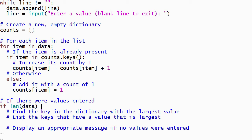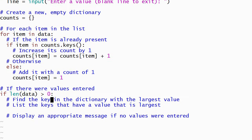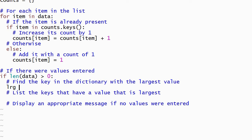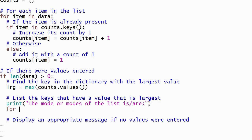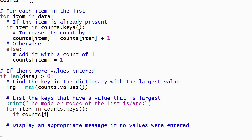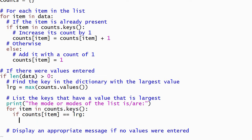We'll use another if statement to determine whether or not the user entered any values. Finding the maximum value could be accomplished using a for loop, but it's easier to use Python's built-in max function. The values from the dictionary are passed to max as its only parameter, and max returns the largest value in that collection. We'll display a message describing our program's output with a print statement, and then we'll use a for loop to find all of the keys in the dictionary that have the maximum value. The for loop will iterate over each key in the dictionary, and its body will compare the value in the dictionary to the maximum value. If the values match, then the key is displayed because it's one of the modes for the list. Note that we don't have any control over the order in which the keys are processed, but we are guaranteed that they will all be processed. Finally, we'll display an appropriate message if the user didn't enter any values.